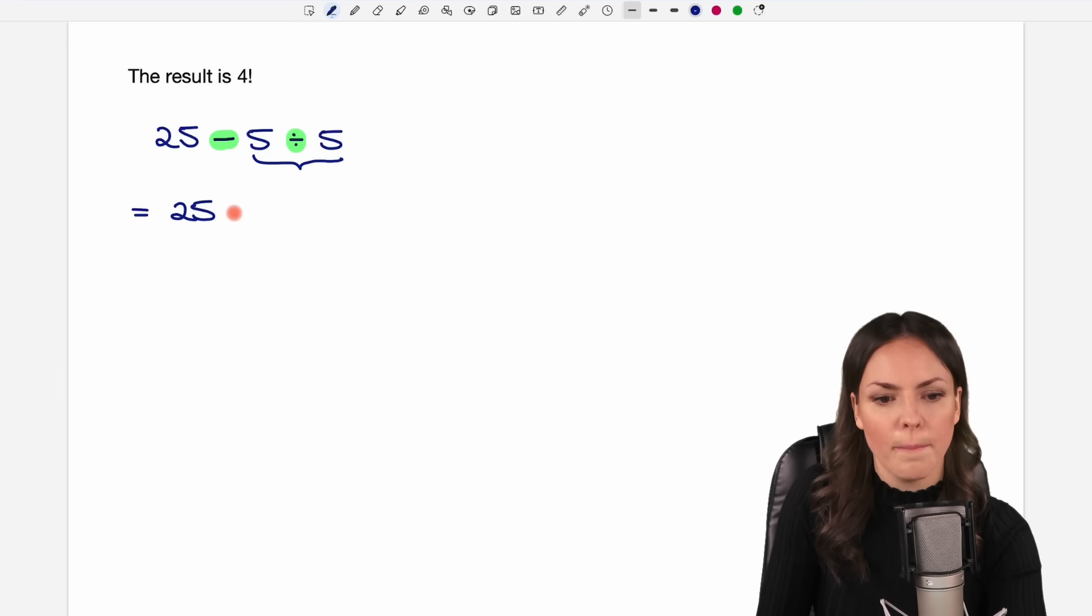So we have our 25 minus, and 5 divided by 5 just equals 1. And then we have 25 minus 1, which is 24. So what is this about? The result is 4. No, it's not, the result is 24. This is the correct way to do it. So what's the joke in all of this?